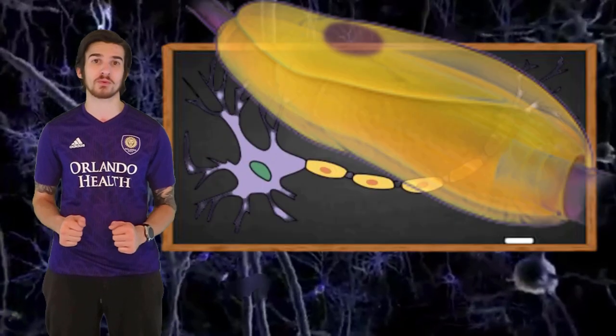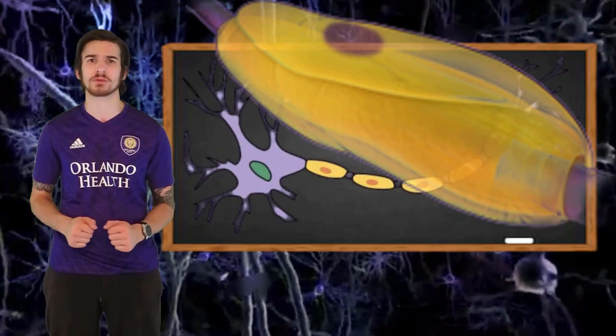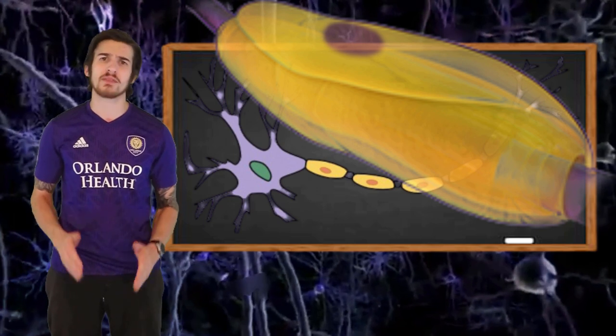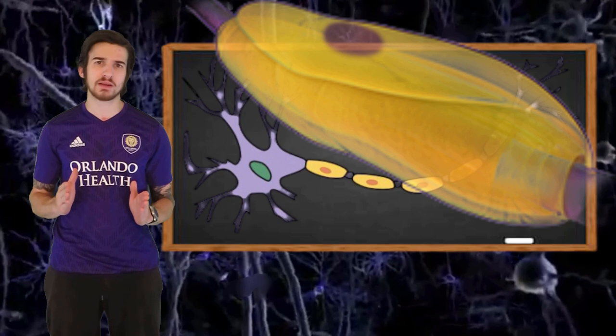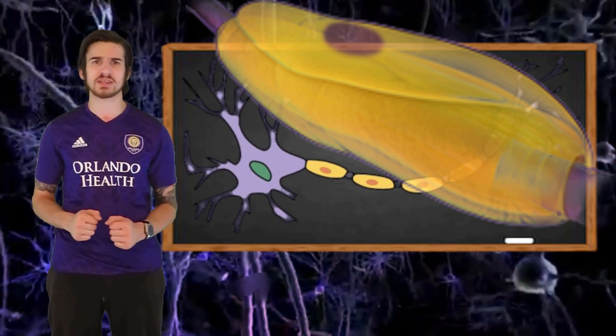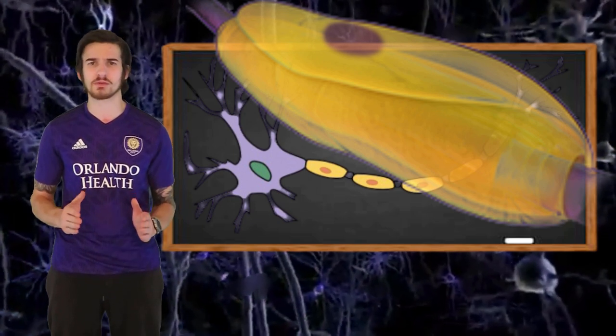Schwann cells are going to perform a similar function in order to produce myelin. The major difference between the oligodendrocytes and the Schwann cells is that one oligodendrocyte can provide myelin for multiple neurons, while Schwann cells are just going to form single myelin sheaths around the axon.